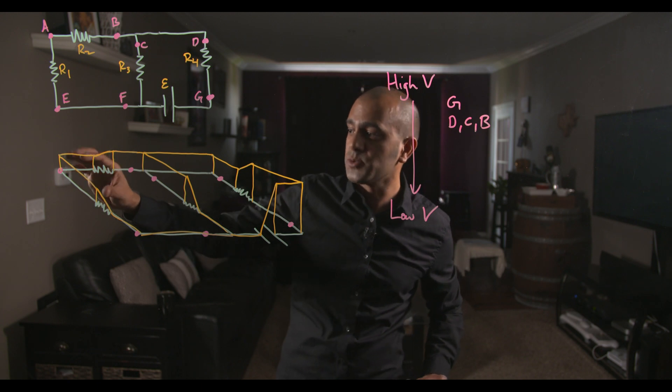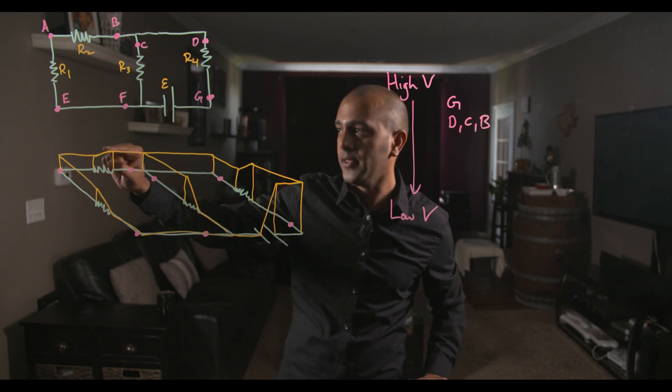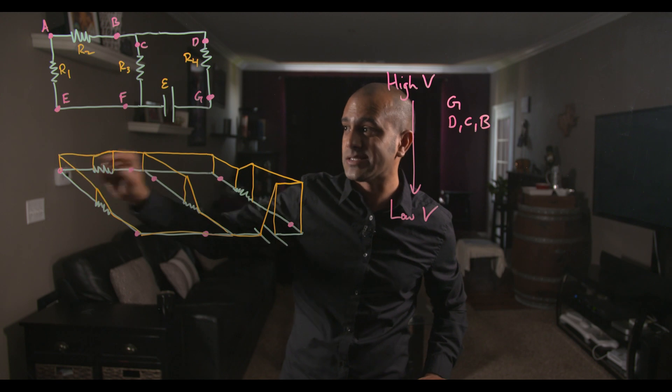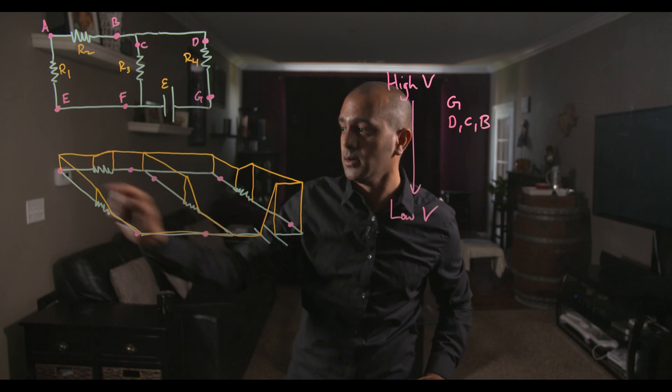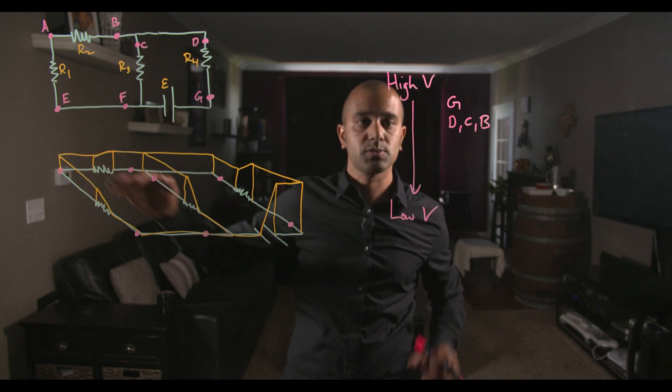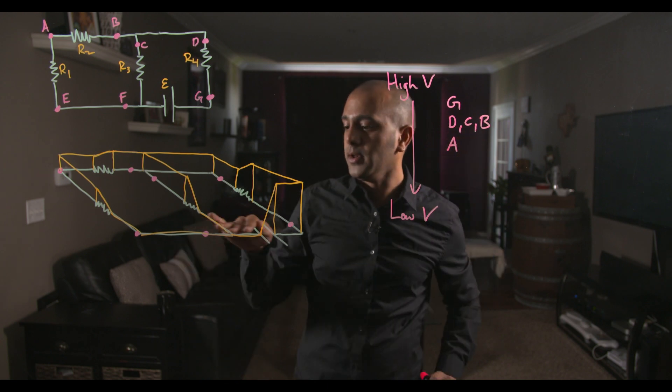However we know that because we have to drop extra potential here that the drop down to A is less than the drop down to F. F is at zero and A is a little bit higher. So the next one down is A and then F and E are both at the bottom here.